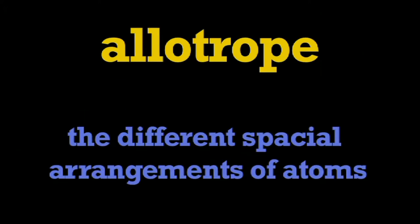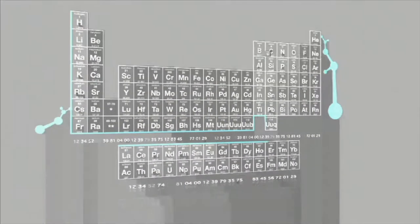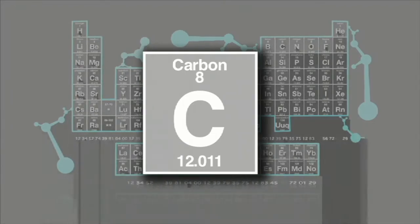The word allotrope comes from the Greek word allotropia, meaning variability and changeableness. The element carbon, for example, has several major spatial arrangements or allotropes.